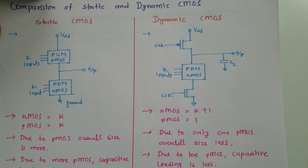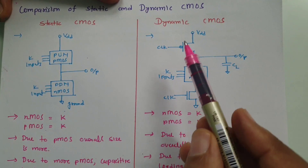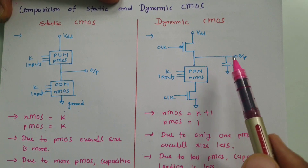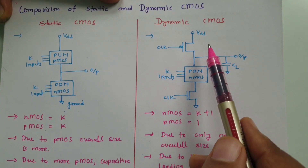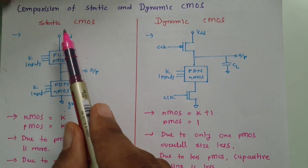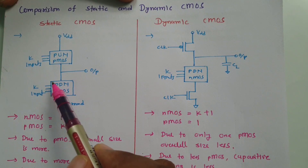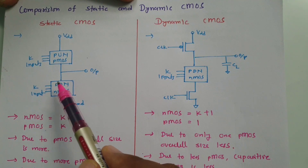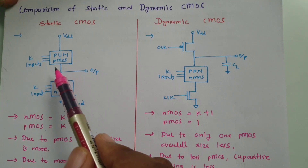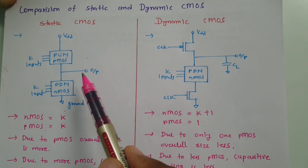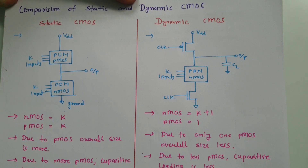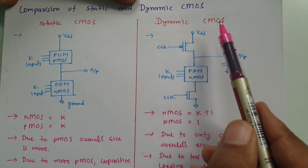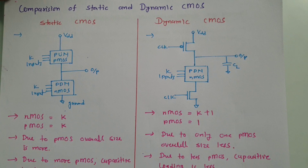Looking at the overall comparison: dynamic CMOS is faster, with lower switching time and less capacitive loading, and its circuit size is small. Static CMOS is slower in switching characteristics due to more PMOS transistors, has higher loading capacitance because of the PMOS structure, and its size is larger. However, static CMOS does not have issues of cascading or charge leakage, while those problems exist with dynamic CMOS.